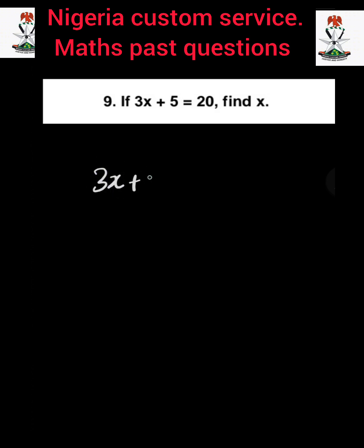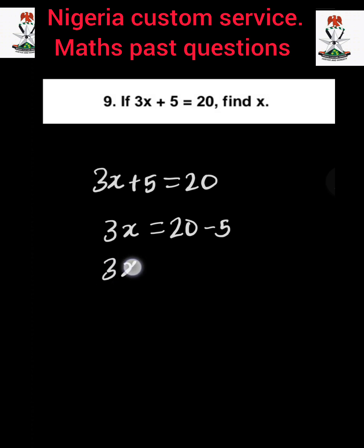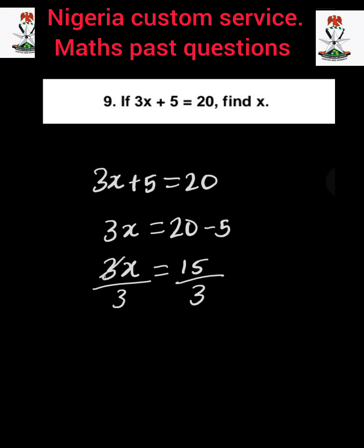Question number 9: If 3x plus 5 is equal to 20, find the value of x. This is a simple linear equation. The given equation is 3x plus 5 equals 20. The first thing we do is take the positive 5 to the right-hand side, where it becomes negative. So 3x equals 20 minus 5, which gives us 15. Then divide both sides by 3 so that 3 cancels, and x equals 15 divided by 3, which is 5.